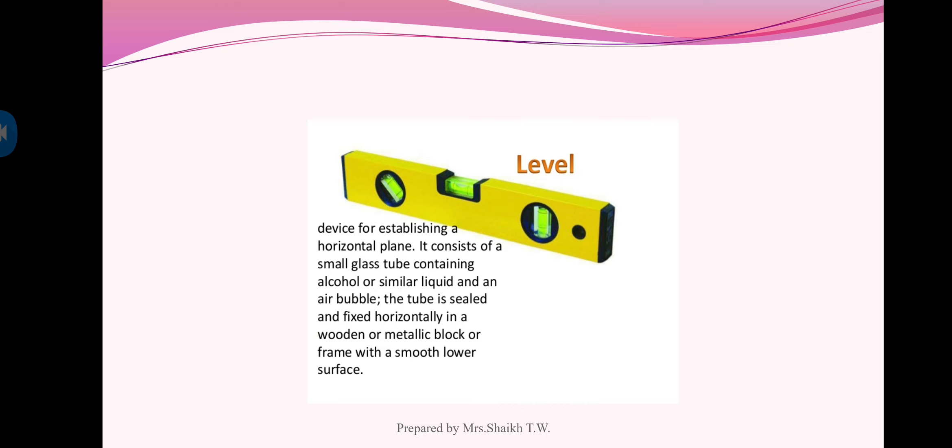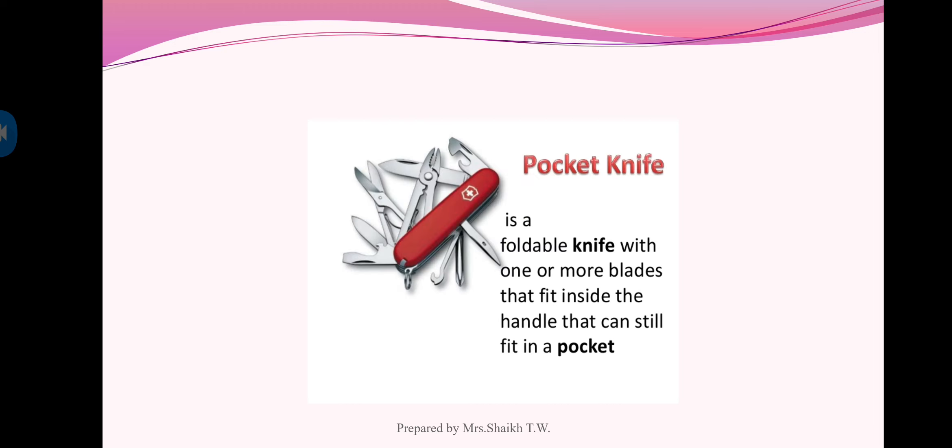Next is level indicator. A device of establishing a horizontal plane consists of small glass tube containing alcohol or similar liquid and an air bubble. The tube is sealed and fixed horizontally in a wooden or metallic block or frame with smooth lower surface.